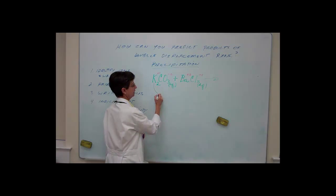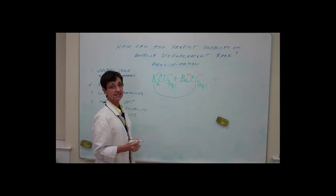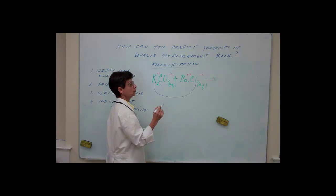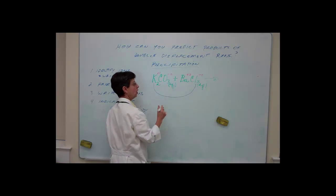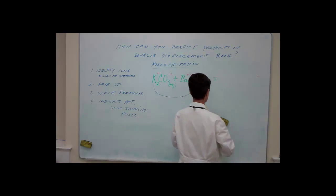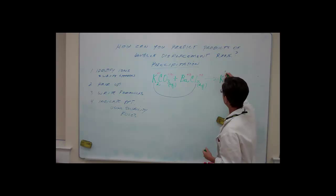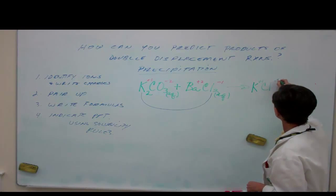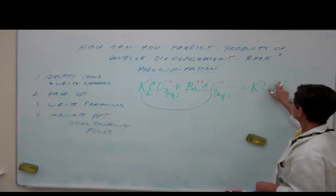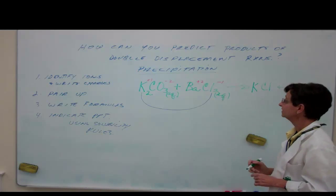The polyatomic ion is negative two, the potassium plus one, the barium plus two, the chloride minus one. This is going to help me in the long run. Now I'm going to take the positive ion of the first compound and combine it with the negative ion of the second compound. Remember that the subscripts are not conserved in a reaction.